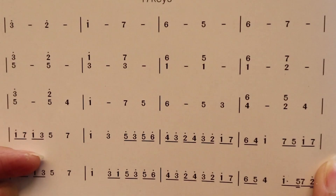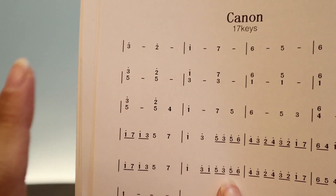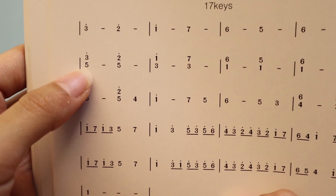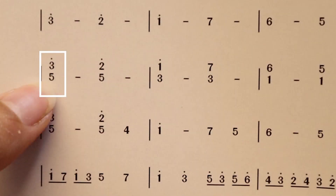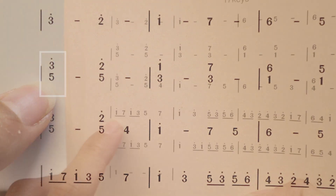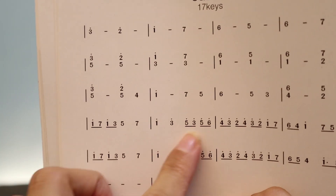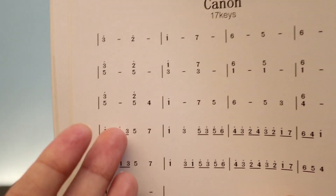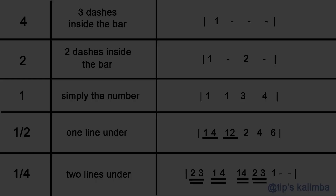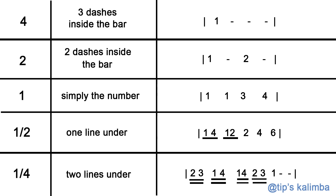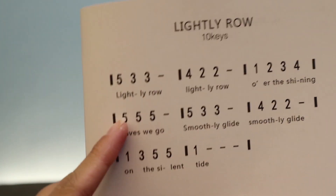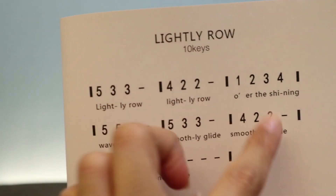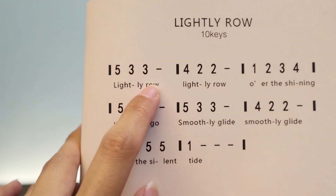For the numbers, this is how they write number notations, but I find this quite complicated. In another version, you'll see numbers on top of each other — this is how they write notes that you play together. The bars denote a certain time frame. I like this style where they write the lyrics down so you know the timing of the song.